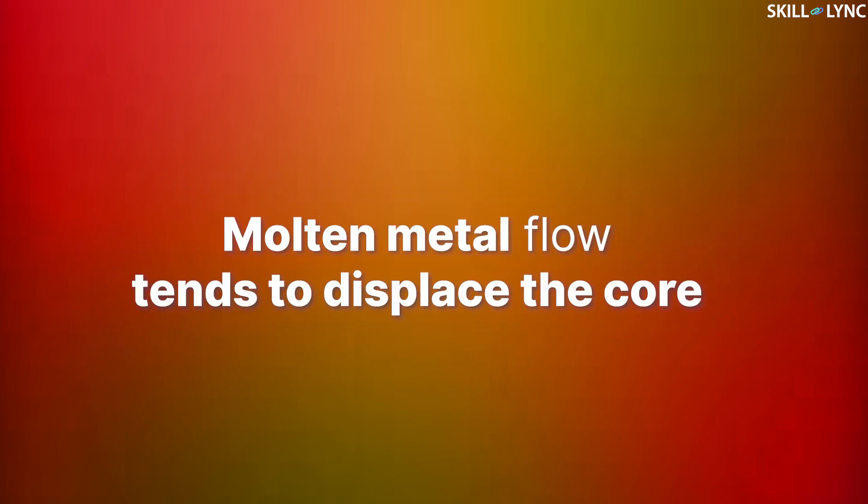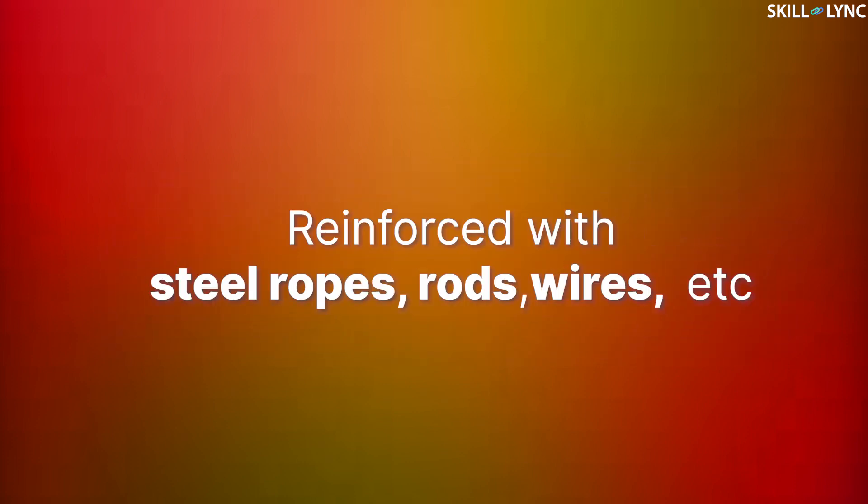Now when the molten metal is poured into the mold cavity, the turbulent flow of the molten metal can tend to displace the core. This is known as core shifting. This can be avoided by reinforcing the core with steel ropes, rods, wires, etc., during the production of core.